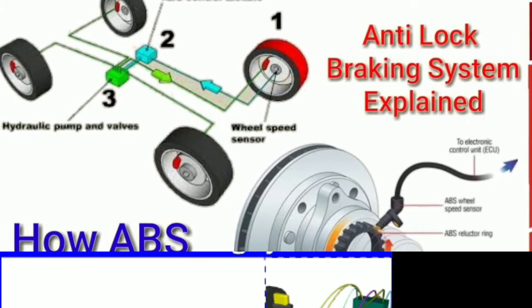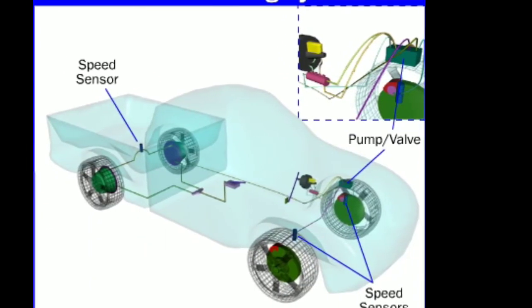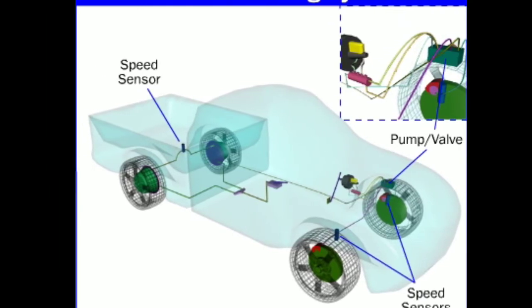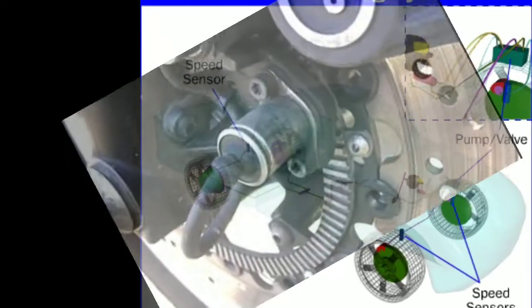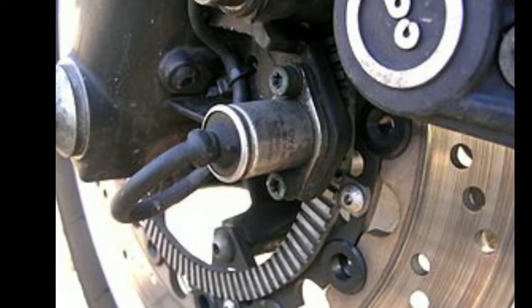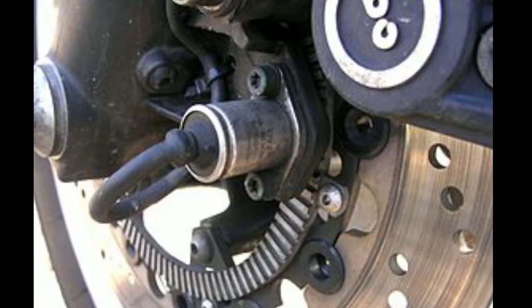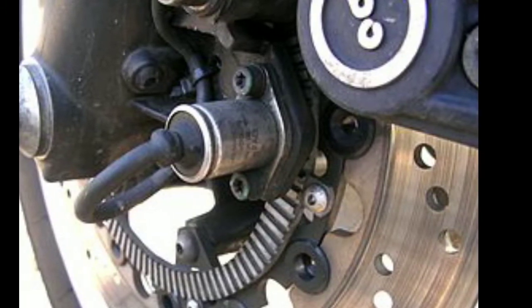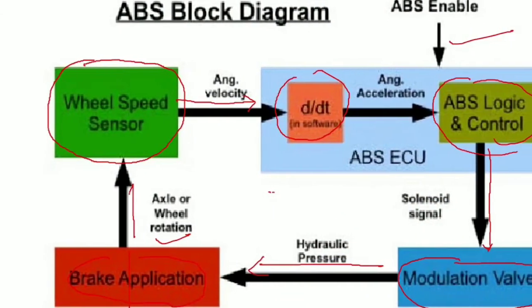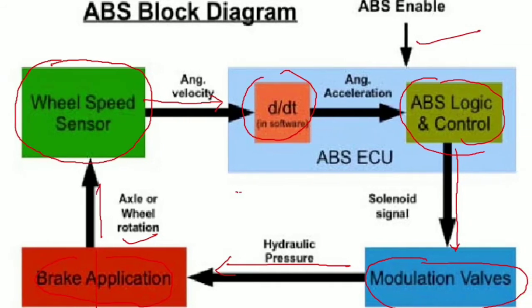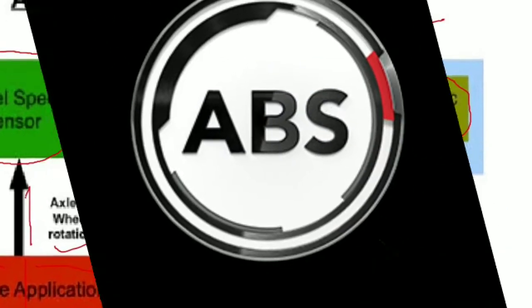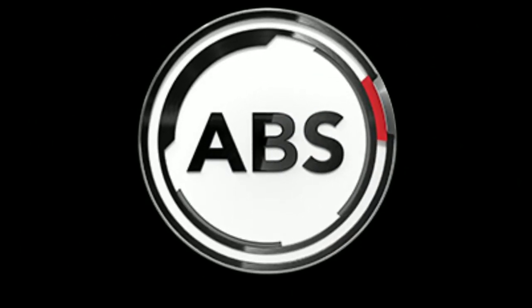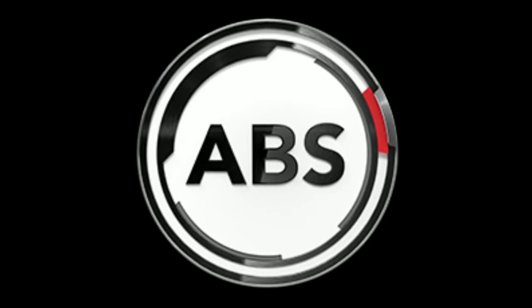The ABS brake system is now available in all cars, so you do not need to do extra research on ABS brake system pricing. However, in case of failure, you can pay a fee in varying budgets, which completely depends on the condition of the fault. The ABS braking system, known in English as the Anti-Lock Braking System, is a braking system developed to minimize the risks of traditional braking and prevents accidents by 18% to 35% according to research.